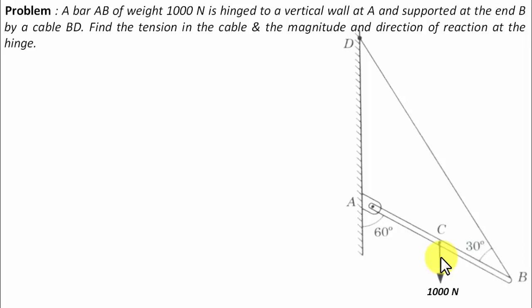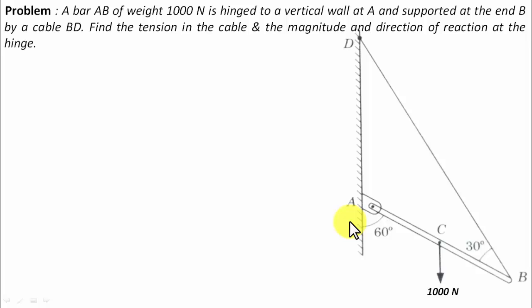To start off, we will work out all the forces acting in this arrangement. At point A, we have the hinge support. The behavior of this hinge support is such that it restricts the motion of the bar both in the horizontal and vertical directions. Hence we have two different sorts of reactions: one in the horizontal direction, which we write as HA, and one in the vertical direction, which we write as VA.